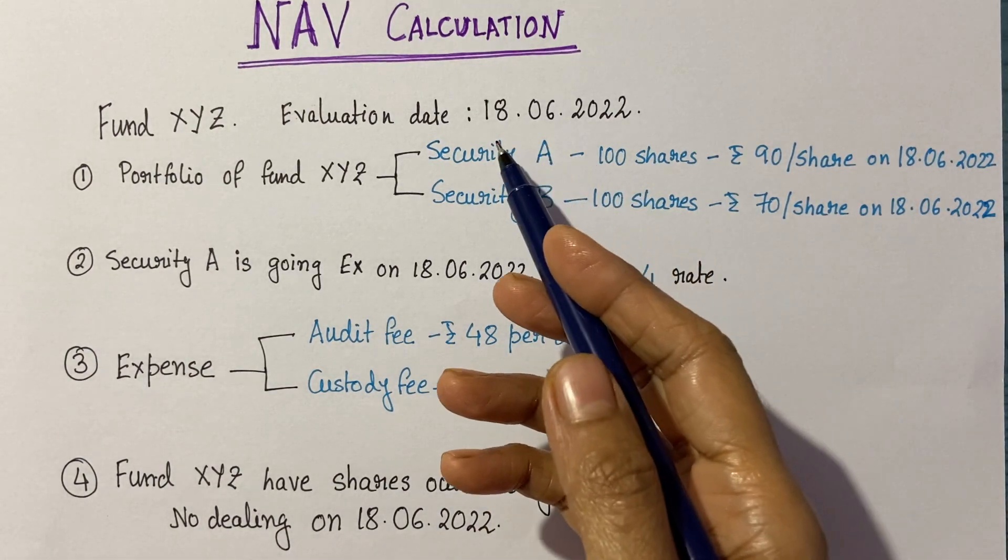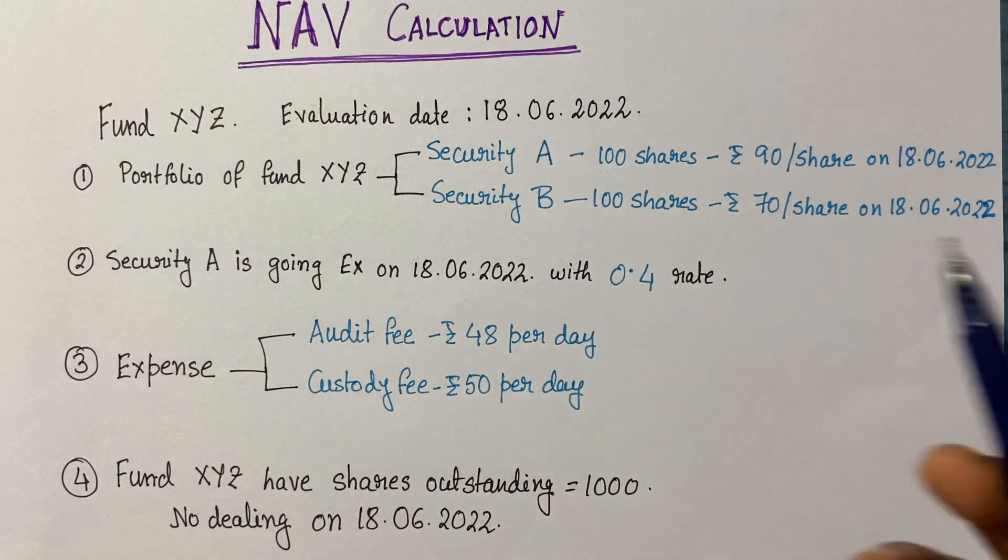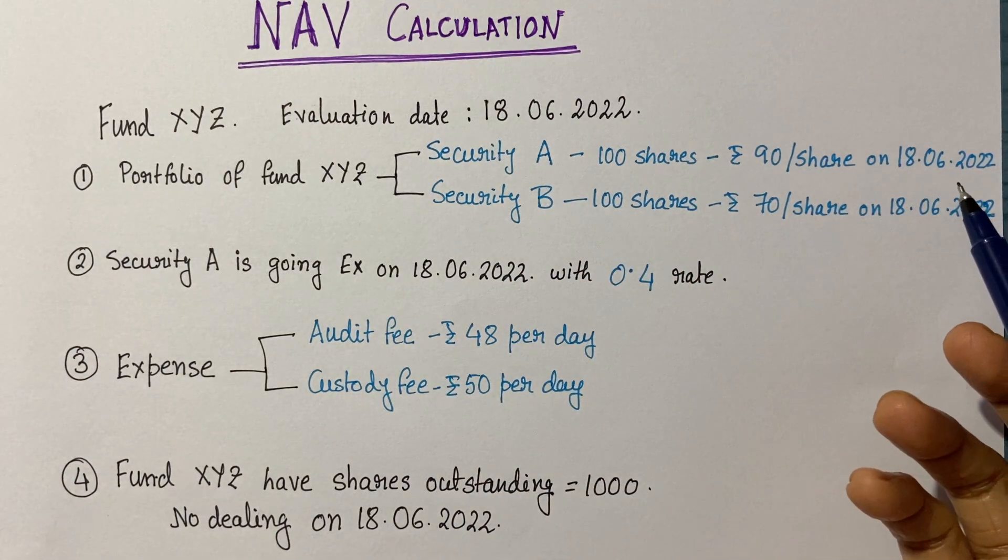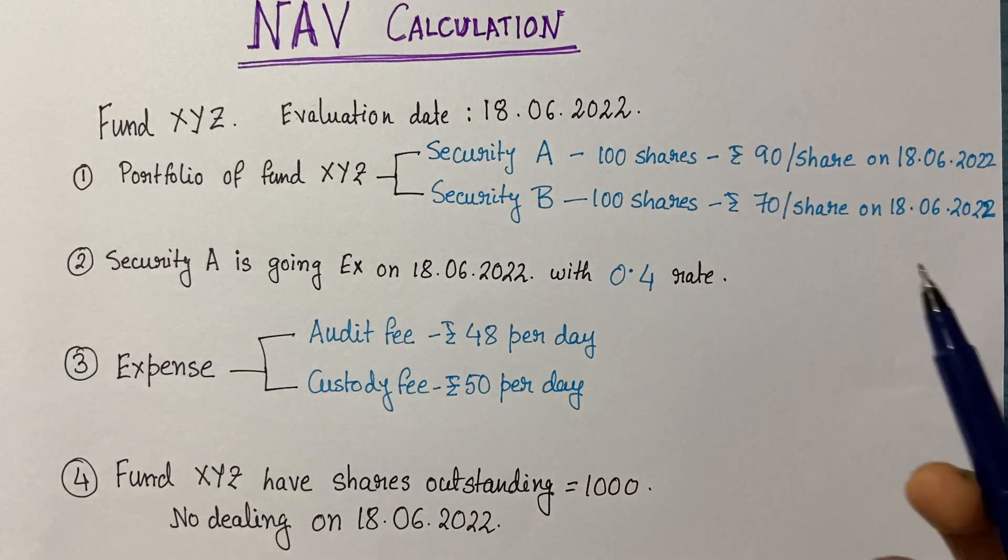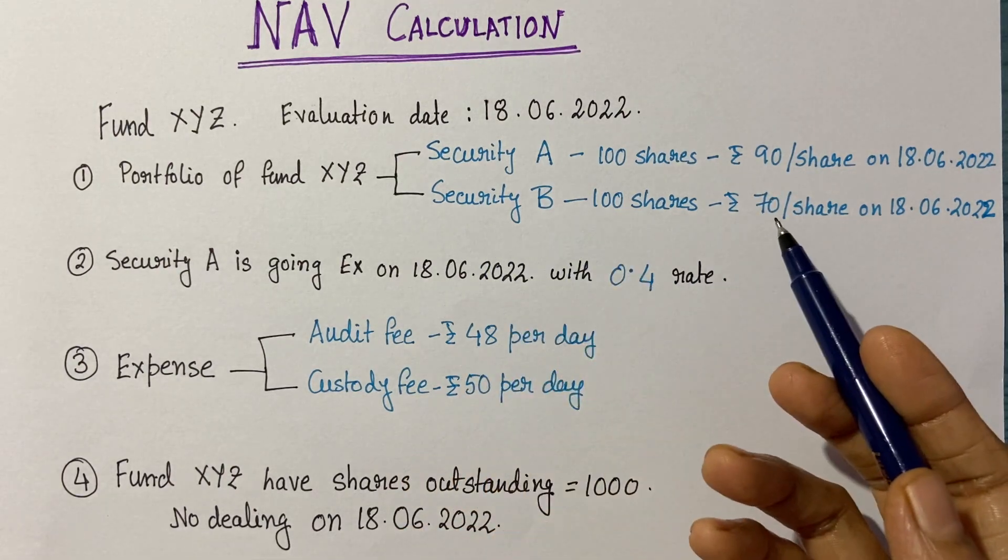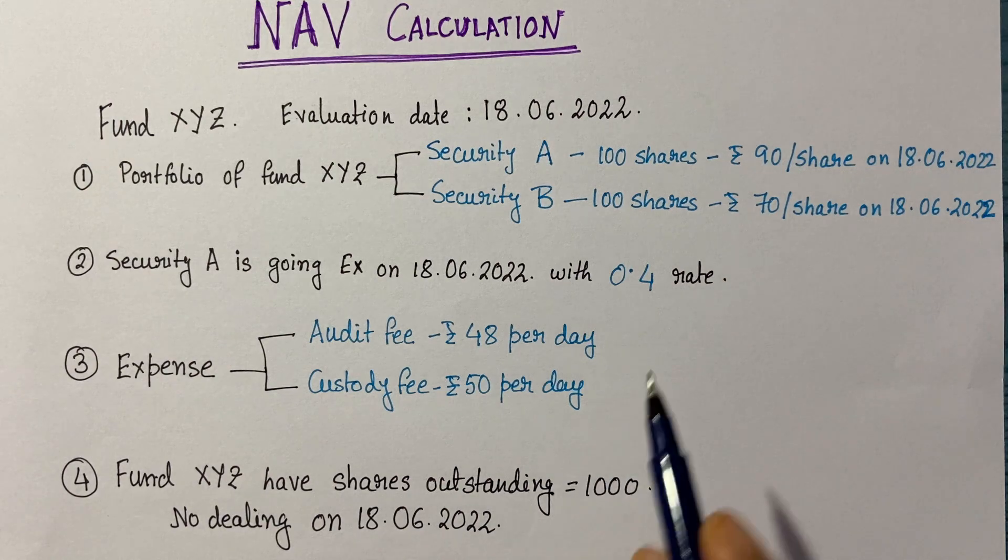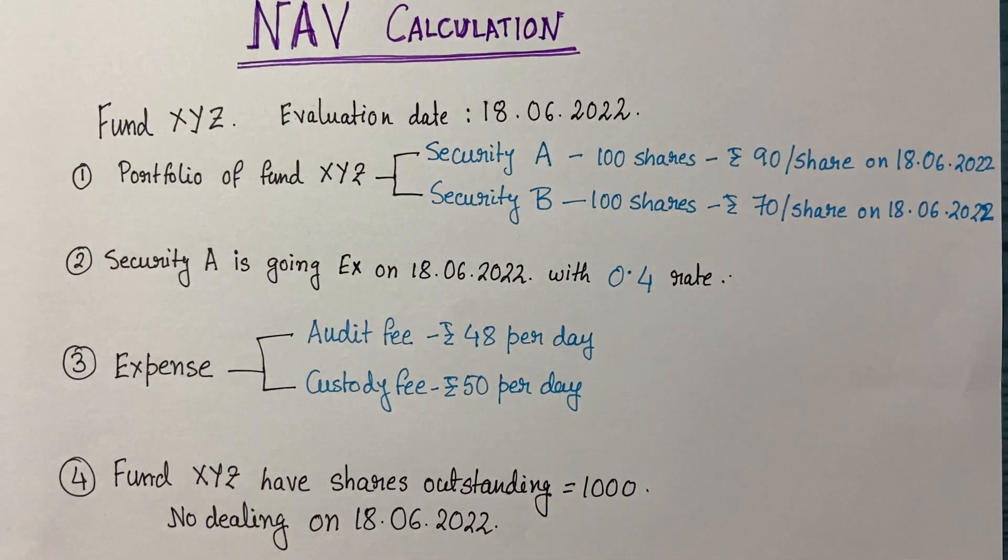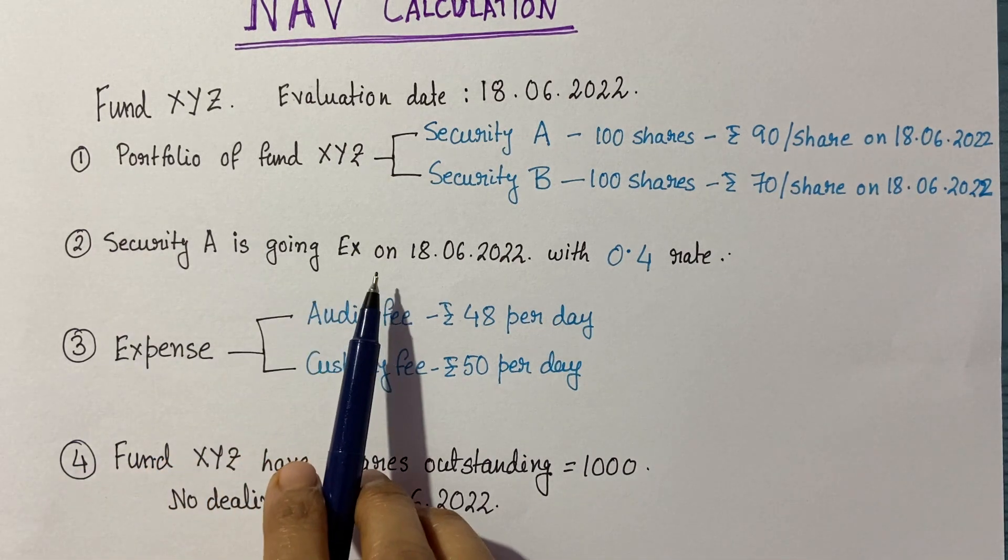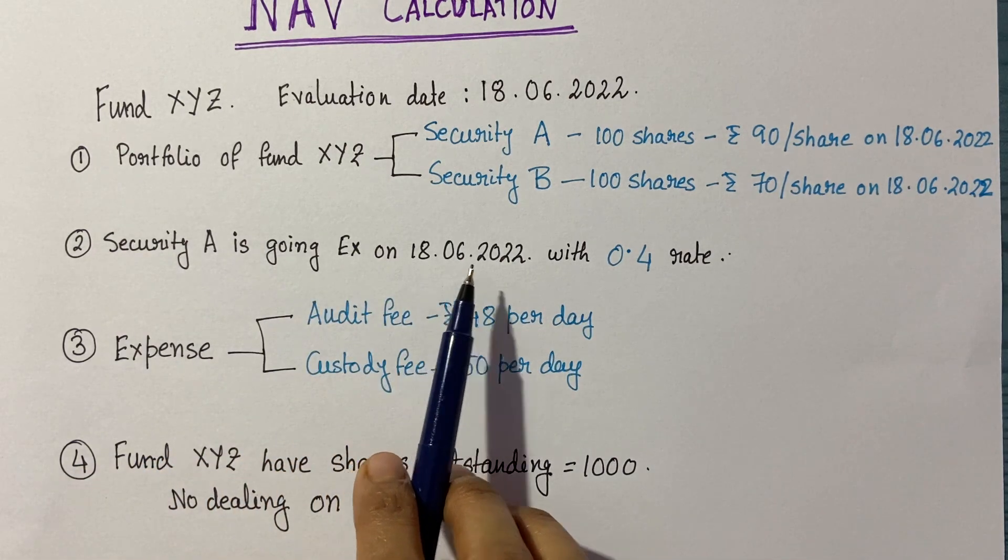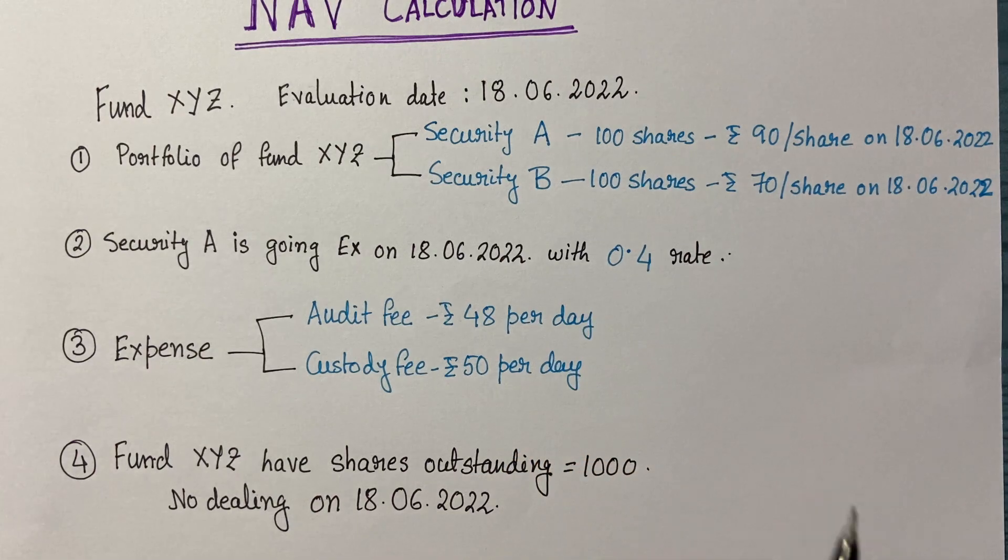We're valuing this fund for 18th June. Let's assume on 18th June, security A's share price is 90 rupees and security B's share price is 70 rupees. Next component: security A is going ex-dividend on 18th June with a 0.4 rate.